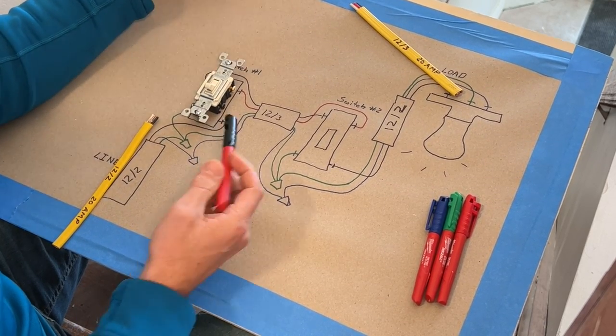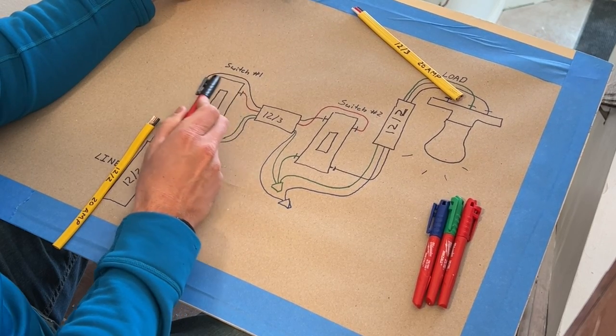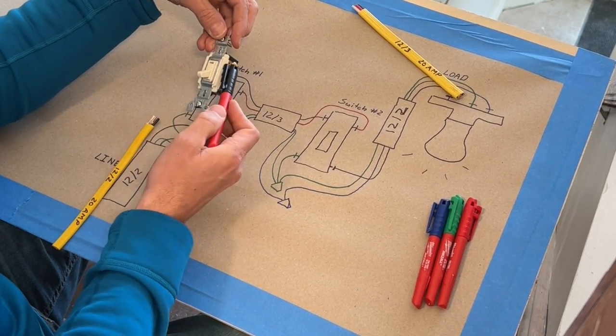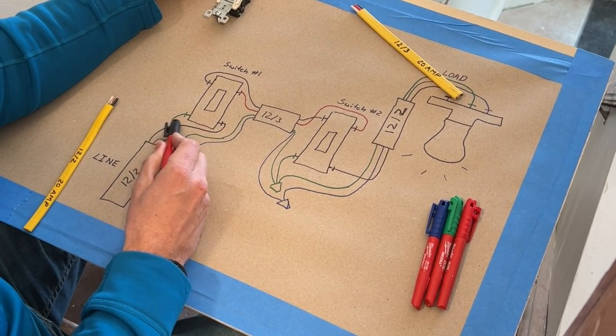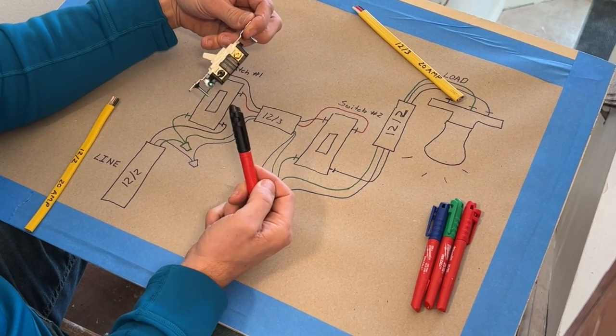Then for the switch, we would have the black common terminal. And here, although I drew the terminals as black, these would actually be the gold terminals. So from our 12-2, we'd provide the hot side, the black hot side, to the black common terminal.